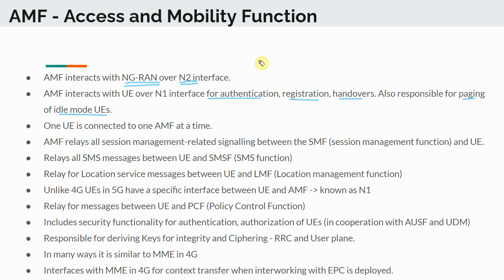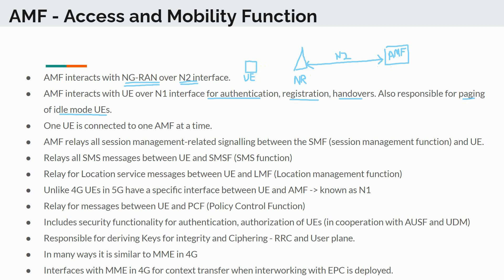To give you a visual sense: you have the UE, then your New Radio or NG-RAN, and then the AMF. There is an interface between the AMF and the NR — this is the N2 interface. In addition, there is an interface between the UE and the AMF, and this is called the N1 interface. So the UE and AMF exchange messages over N1, and the NG-RAN and AMF exchange messages over N2.